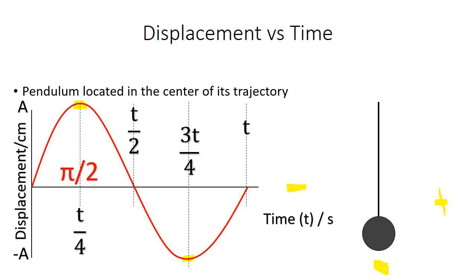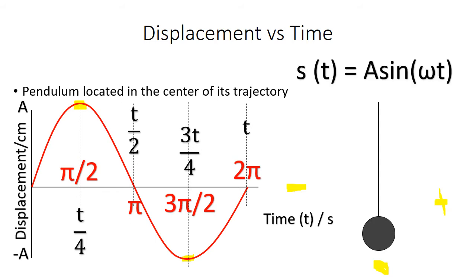If I want to relate this to radians: one fourth of the period is pi over two, half the period is pi, 75% of the period is three pi over two, and a full period is two pi. I could give an equation for this function: the displacement with respect to time is the amplitude of the sine wave times sine of omega t, where omega is the angular frequency. You can relate the angular frequency using the radians.